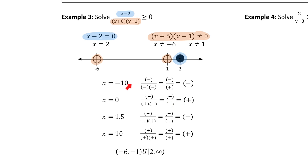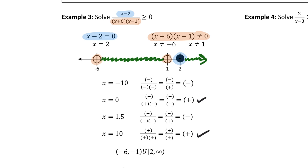There are four intervals to test. After completing the sign chart, we look for where the function is greater than or equal to zero. That's the second and last intervals. The final answer is from -6 to 1 (open, since those are undefined values) or from 2 to positive infinity (with a bracket at 2 since that's a zero and we include equal to).